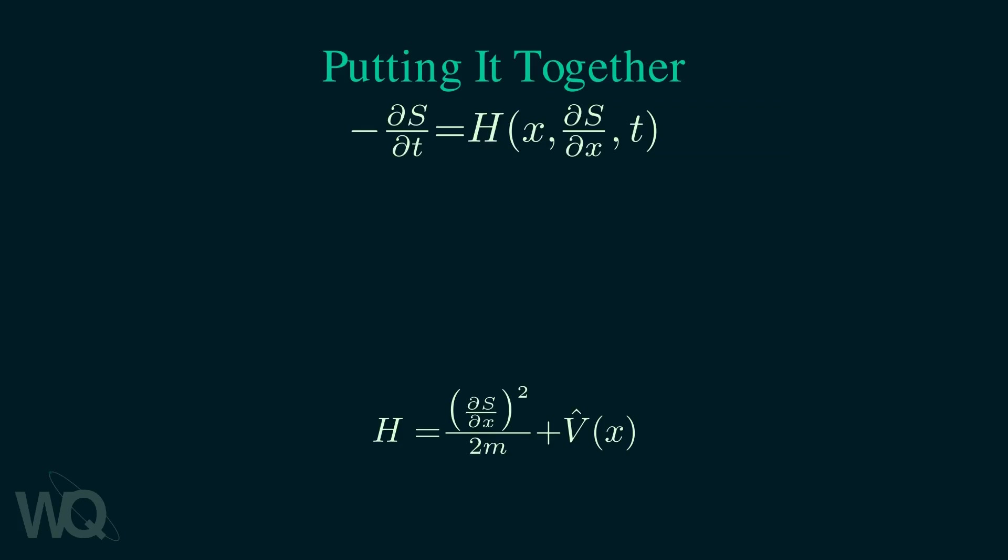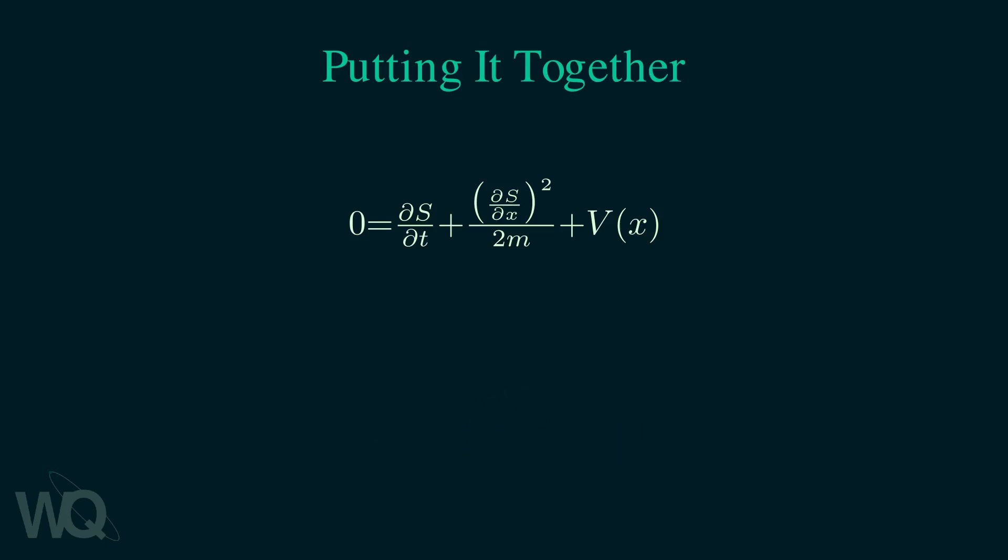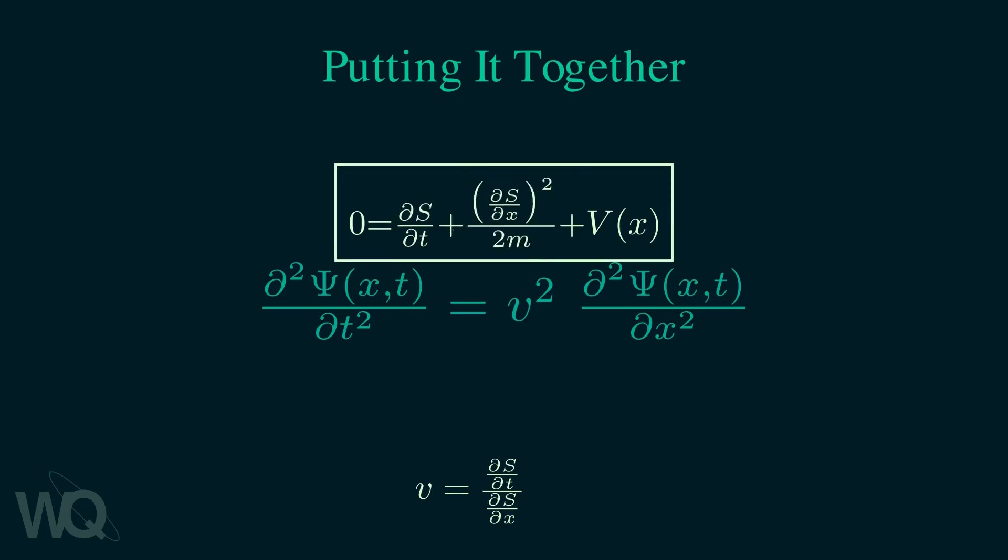To understand why we do this notice that here the Hamiltonian is supposed to be a function of position, time and the derivative of action and that's why we chose to write the Hamiltonian in this fashion. If we insert the Hamiltonian into the Hamilton-Jacobi equation and move everything to one side we get the following. Remember what we are trying to do. We had the wave equation and we are trying to find this v which is the velocity of the wavefront. Then we rewrote the velocity in terms of derivatives of action, hoping that the Hamilton-Jacobi equation might be of help since the same derivatives also turn up there.